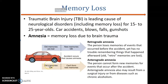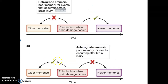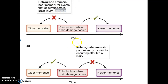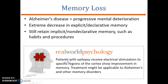But when the old memories are intact and a person who has had a traumatic incident can no longer form new memories, that is called anterograde amnesia. Understanding that difference is important — in one case you can form new memories but lose the old ones, and in the other you retain old memories but cannot form new ones.